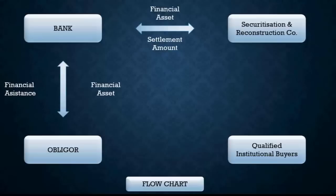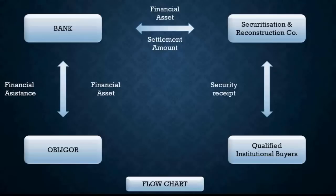From where does the securitization company get the money to pay the bank — the settlement amount, the 3 crores? For that, they approach the qualified institutional buyers, who are the basic investors in the entire flow. They prepare a scheme: 'This is the asset we are taking, this is how we are planning to reconstruct it, and whatever amount we get, this will be your share and your profit.' They approach the qualified institutional buyer and give them a security receipt — this receipt is not compulsory to be registered. The securitization company maintains the amount in a separate bank account, reconstructs the asset, and pays back the money with the agreed profit share. The qualified institutional buyer gives them the finance, and that finance goes to the bank.